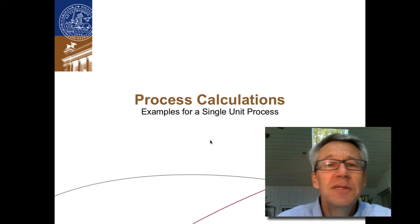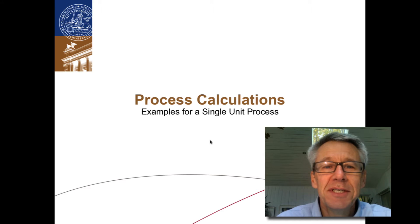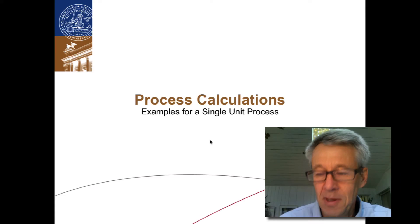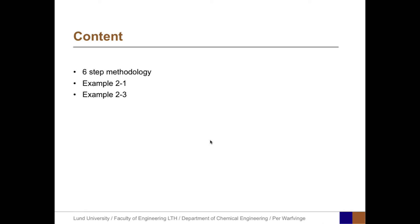This screencast is one in a series on process calculations, and the title is Examples for a Single Unit Process. The content covers the six-step methodology we're going to apply, and two examples: Example 2.1 and Example 2.3.